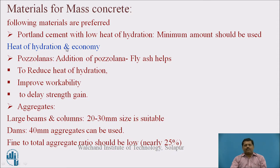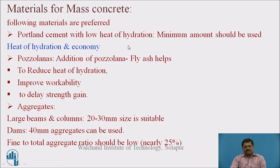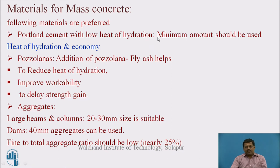Let us see what the materials for mass concrete are. First is Portland cement with low heat of hydration. When mass concrete is used, the extent of the concrete is large, so the use of cement is also more, meaning the evolution of heat of hydration is more. Cement with low heat of hydration minimizes this, and an economic benefit can also be achieved.